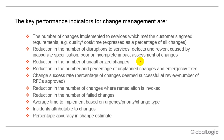Reduction in the number of unauthorized changes — we must reduce unauthorized changes. Reduction in the number and percentage of unplanned changes and emergency fixes. While emergencies are not always in our hands and can come at any time, with proper maintenance of services and systems we can avoid emergency breakdowns. The main KPI is to reduce the percentage of unplanned changes and emergency fixes.